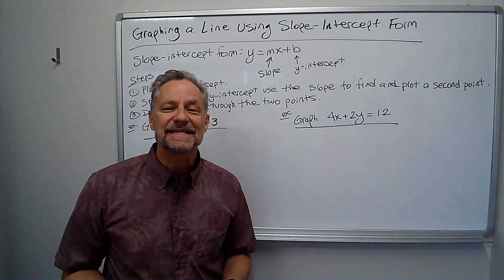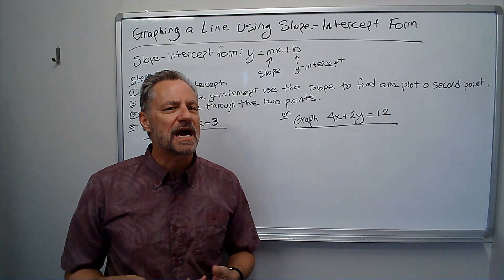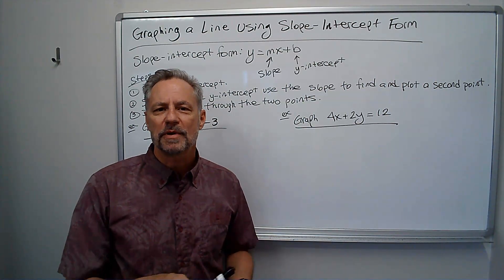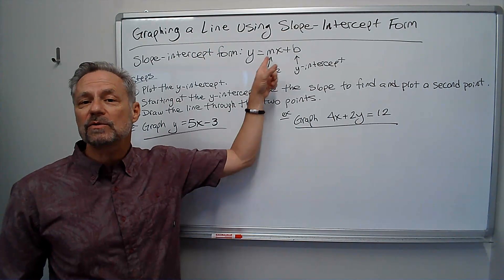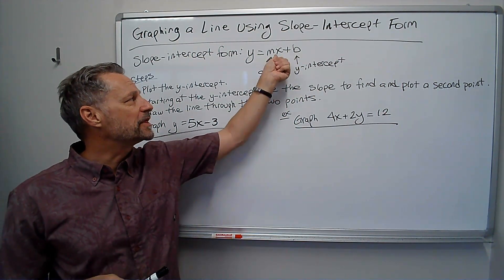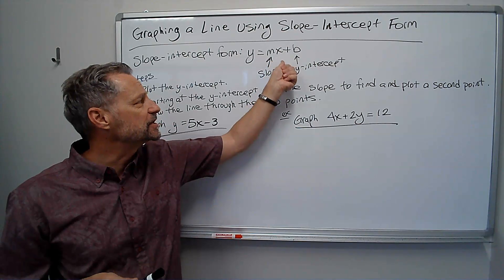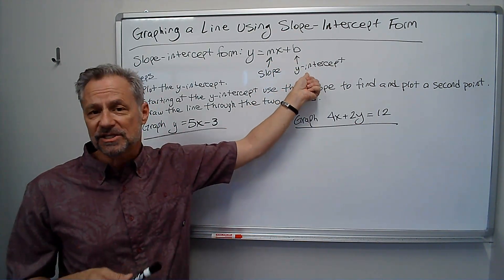Hi there, it's Professor Monte. Let's talk about graphing a line using slope-intercept form. Remember, slope-intercept form is y equals mx plus b, where m is the slope, that's the number in front of the x, the coefficient, and b is the y-intercept, just the constant.